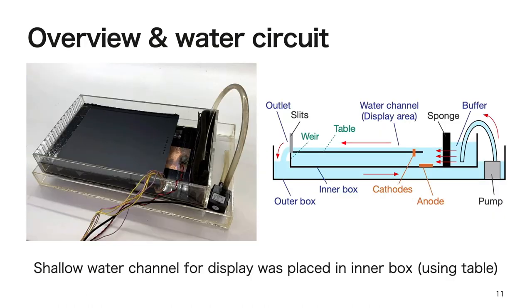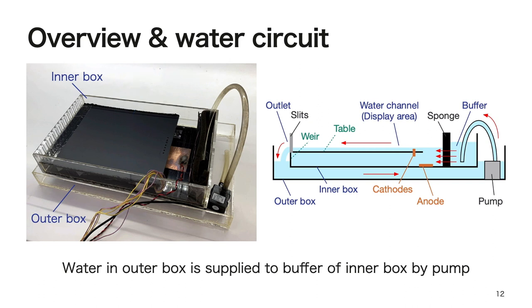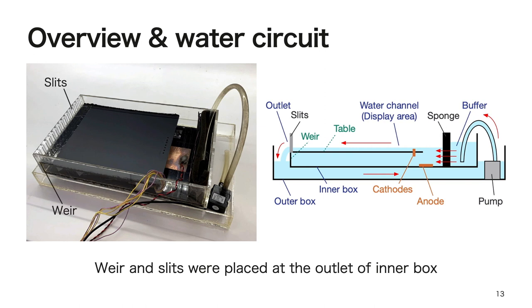Here is an overview of the device and the water circuit. An inner box was placed in a larger outer box. Then, a shallow water channel for the display was placed in the inner box. To generate the water flow in the inner box, water is supplied to the buffer reservoir of the inner box and drained out from the outlet. We used a water pump to circulate water, and we placed sponge between the buffer and the water channel to mitigate passive turbulence caused by the pumping mechanism. Water is drained through a weir with slits installed.